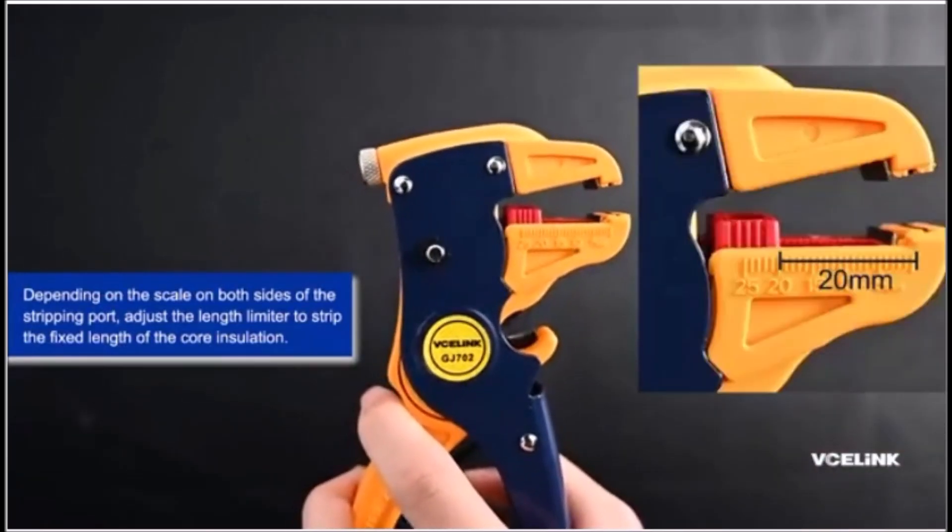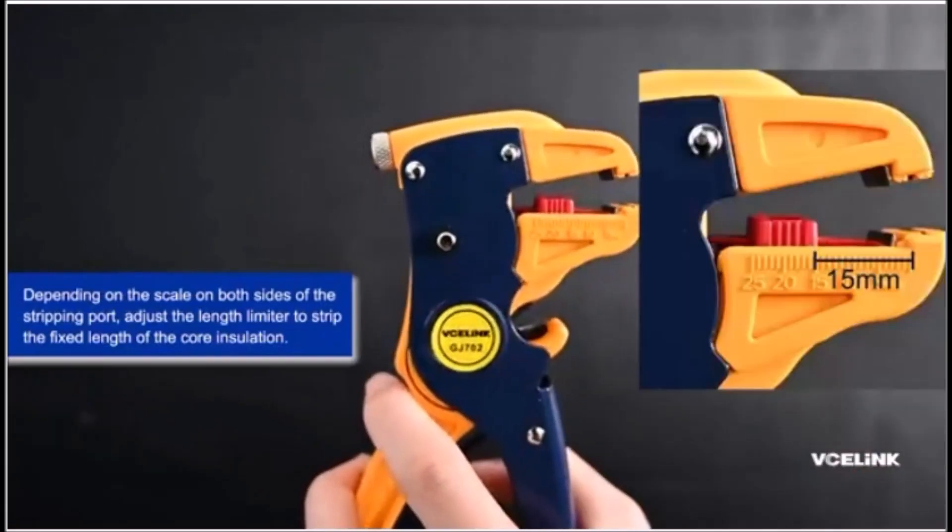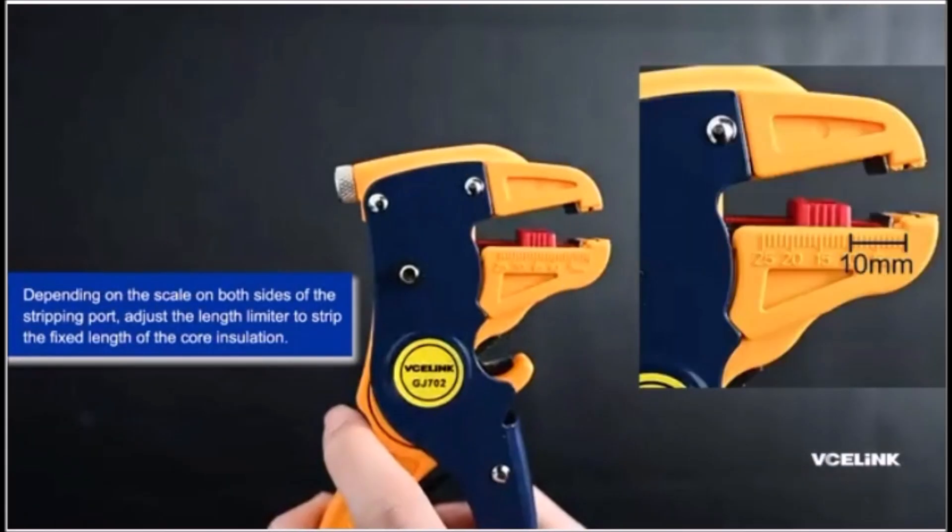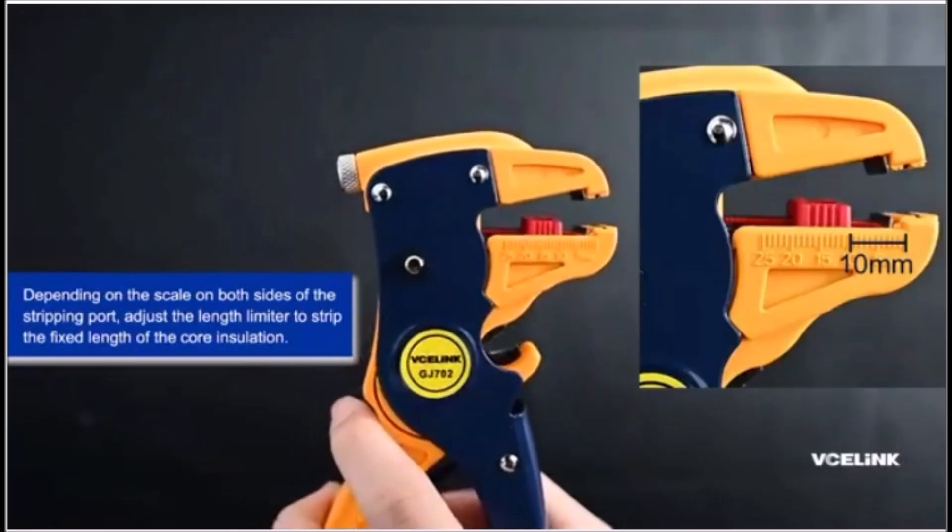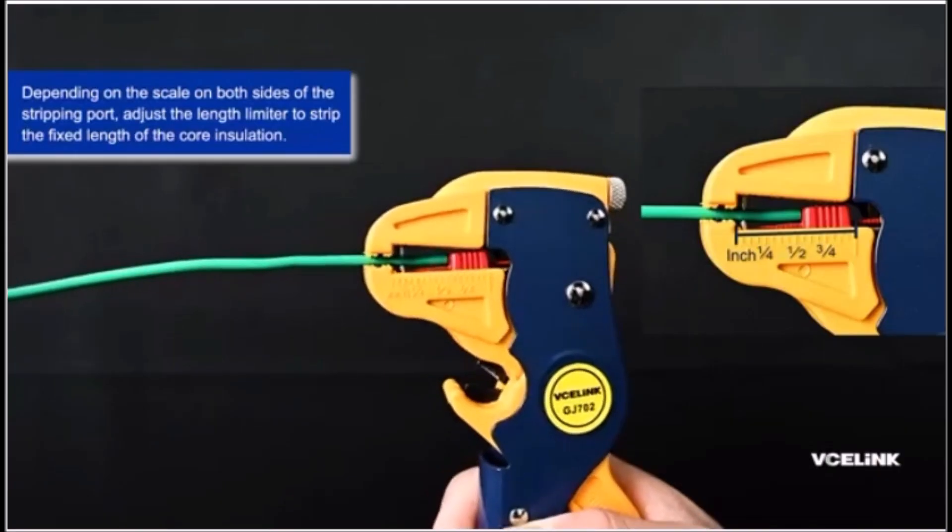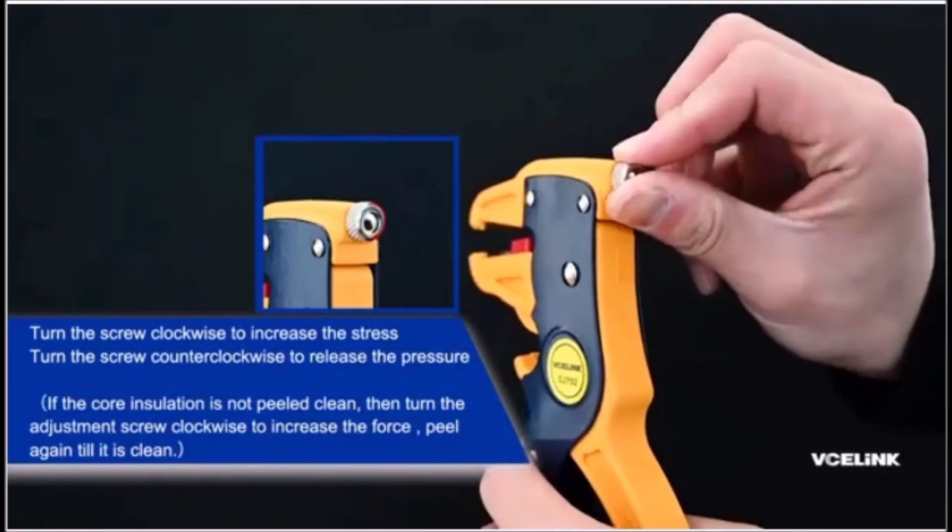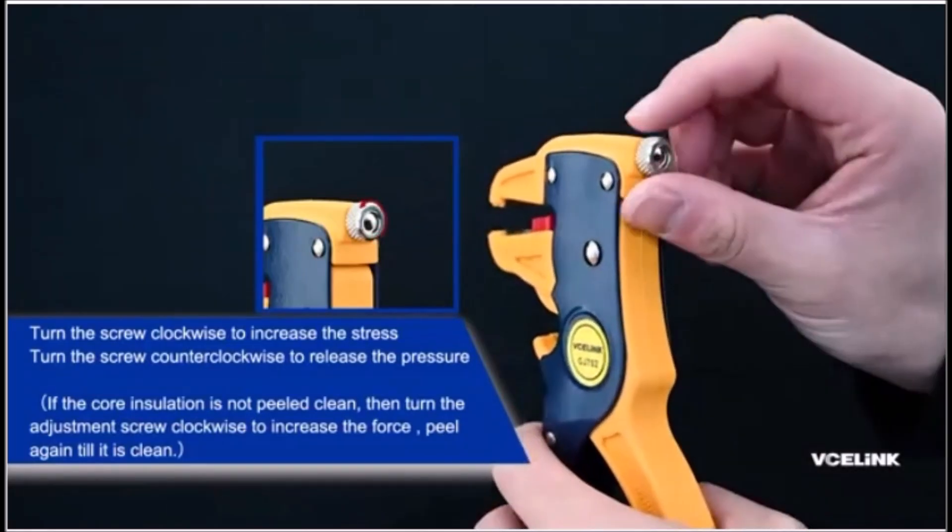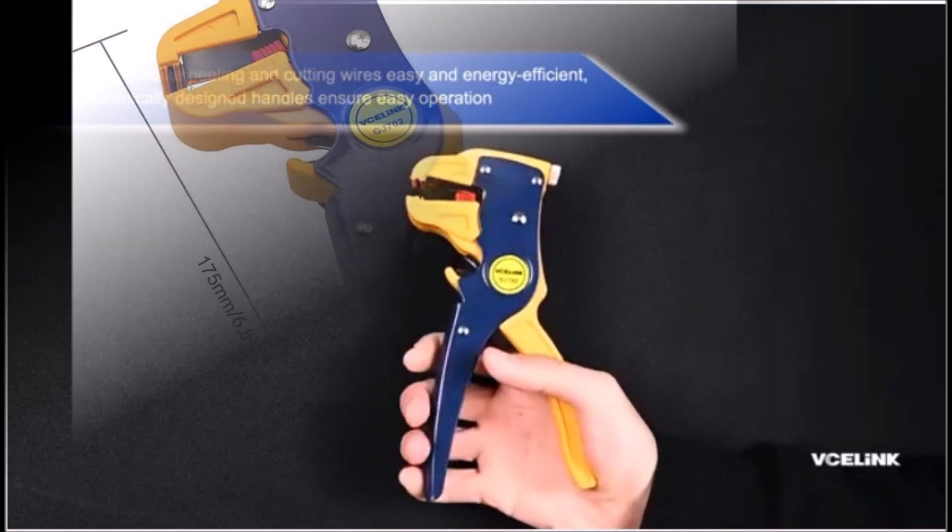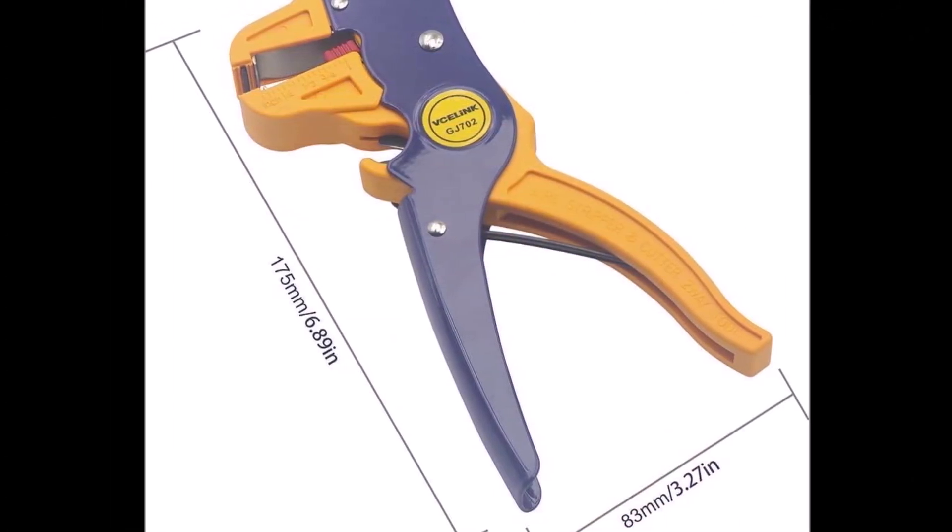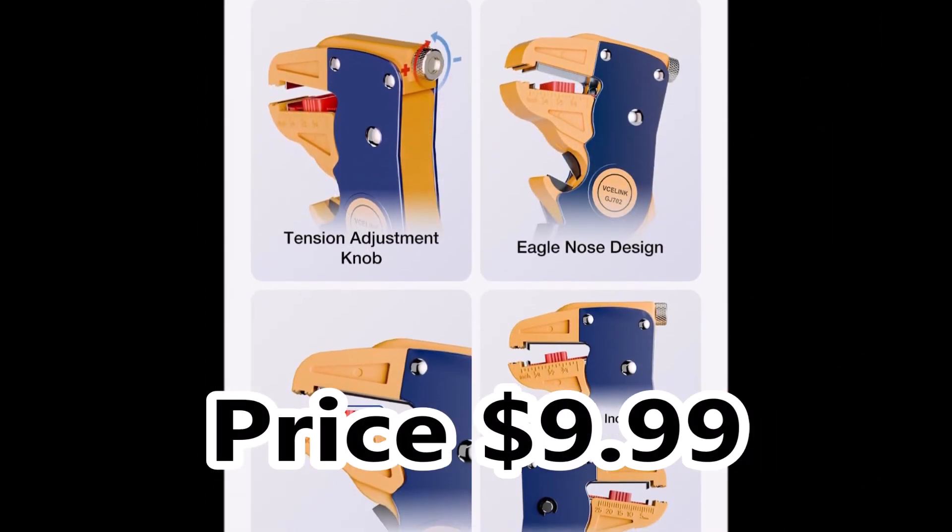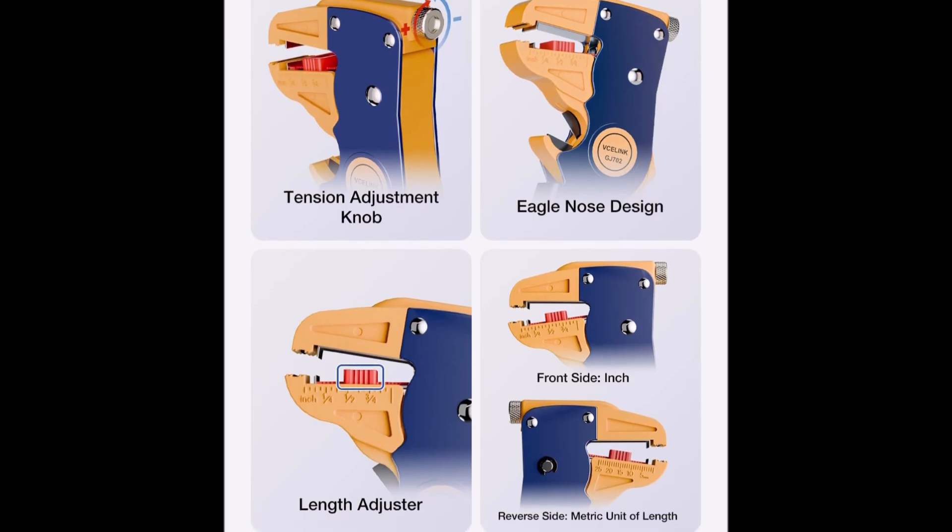The pressure adjustment knob adds precision, while the length adjuster ensures consistent results. Lightweight yet sturdy, it fits easily into a tool pouch without adding bulk. Compared to traditional pliers, this tool saves time and reduces hand fatigue, especially during long sessions. The non-slip grip adds comfort, and the compact size makes it perfect for quick jobs or on-the-go repairs. Whether for DIY projects or professional use, this wire stripper delivers reliable performance without the fuss.